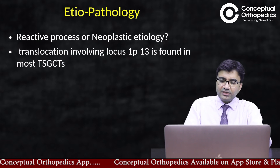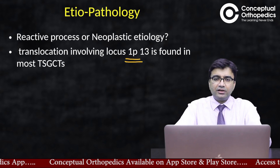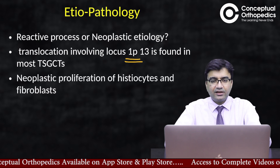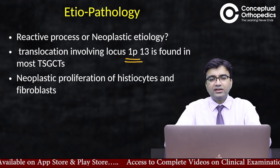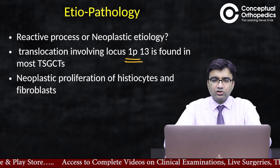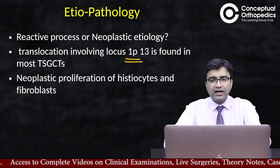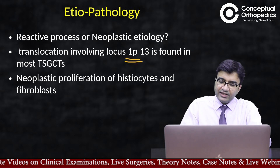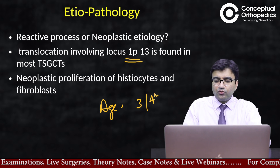Regarding the neoplastic etiology, the genetic alteration we must be aware of is a chromosome 1 deletion, which has been found in most cases of tenosynovial giant cell tumors. This leads to proliferation of histiocytes and fibroblasts. It may involve any site in the body and can affect any age, but the most common age group where we see it is in the third and fourth decade.